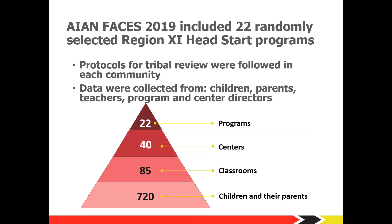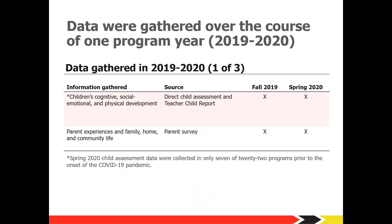Our goal for these 22 programs was to collect data in 40 centers, 85 classrooms, and from 720 children and their parents. During the program year, some data were collected during fall and spring, while other data were collected only during the spring. As you might expect, the COVID-19 pandemic disrupted some of our data collection plans. In the fall and spring, children's cognitive skills in language, literacy, mathematics, and executive function, and physical development were directly assessed. We were not able to complete the direct assessments in all programs in spring 2020; the data we did collect are available as a supplemental file.